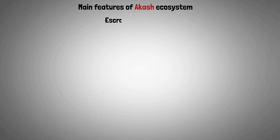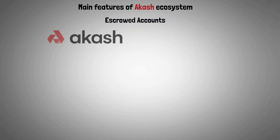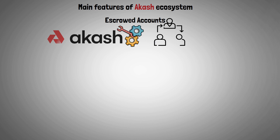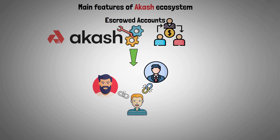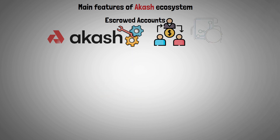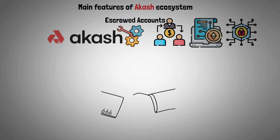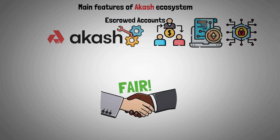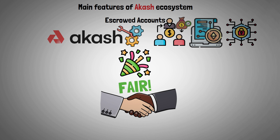Escrow Accounts: The Akash project makes use of escrow accounts because the ecosystem's cryptography allows for multiple parties to transact with each other. They are smart contract powered and cryptographically secured, and guarantee fair deals for all parties involved. Money will be kept in an escrow account until a predetermined event takes place. After the auction, any money left over in the deposit will be given to the tenant.